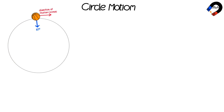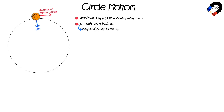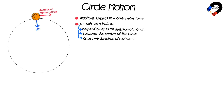We can conclude the following about circular motion. This resultant force, or sigma F, is called the centripetal force. It acts on a ball at a perpendicular angle to the direction of motion, which causes it to always act towards the center of the circle. This changes the direction of motion of the ball at any point in the circular path.